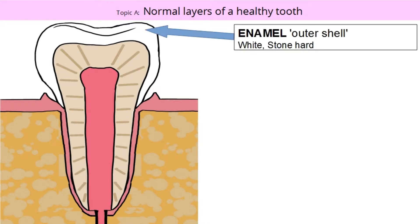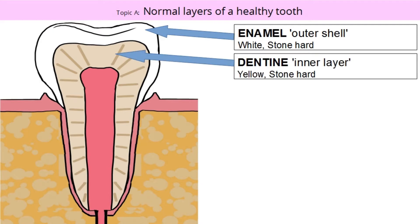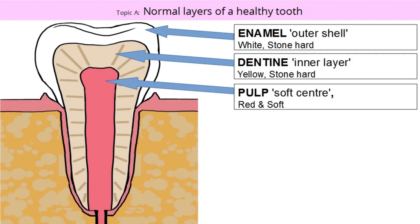Enamel is the outer shell, and is white and stone hard. Dentine is the inner layer, and is yellow and stone hard. Pulp is the soft center, and is red.